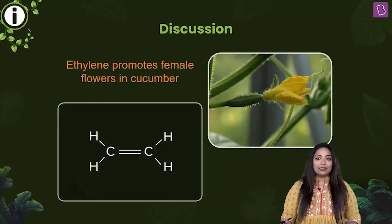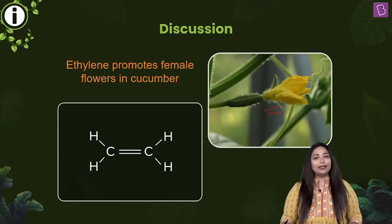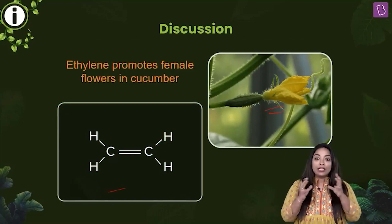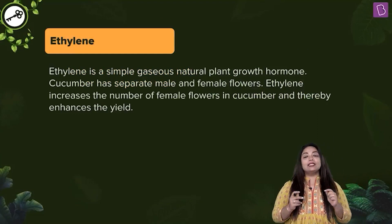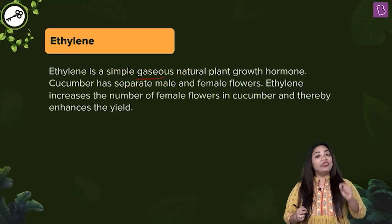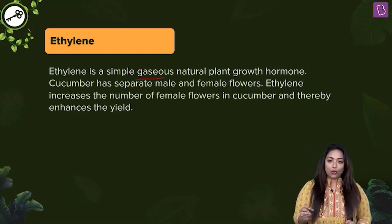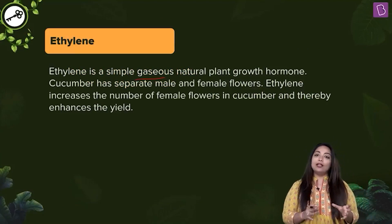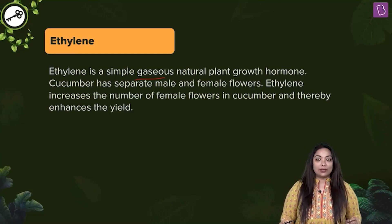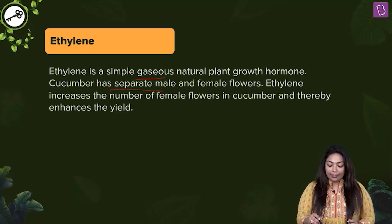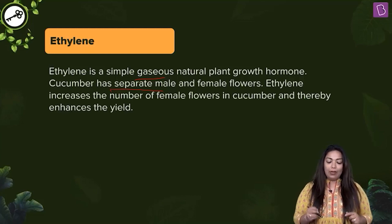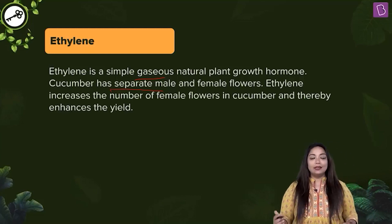Let's sum this answer up. Ethylene promotes female flowers in cucumber. Ethylene is a simple gaseous natural plant growth hormone. Note that it also has some inhibitory activities. However, in cucumber, what it does is — cucumber has separate male and female flowers — Ethylene increases the number of female flowers in cucumber and therefore increases the yield.